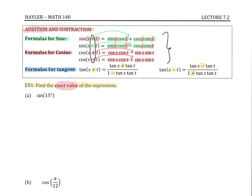So for sine of 15 degrees, can I rewrite that as an addition or subtraction of two values we know? Yes — we can rewrite this as sine of 45 degrees minus 30 degrees. I chose 45 and 30 because when I subtract them I get 15 back, so nothing has changed, and I know what sine of 45 and sine of 30 are.